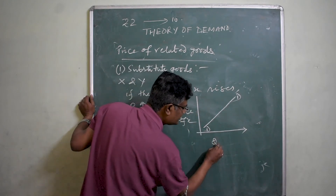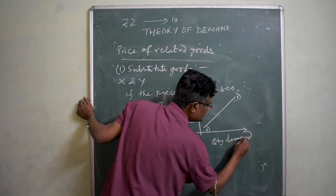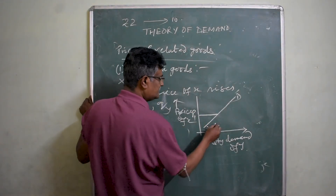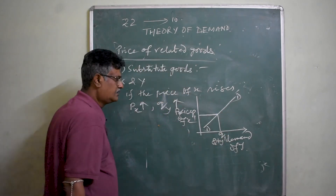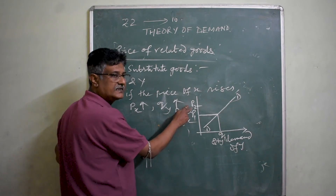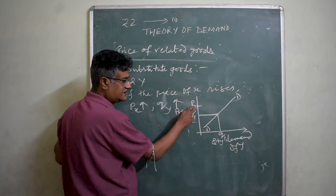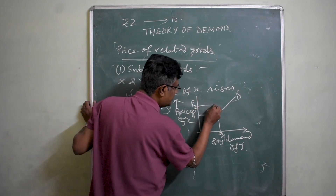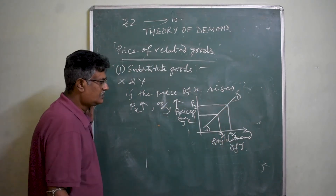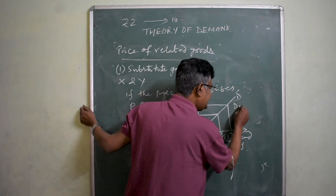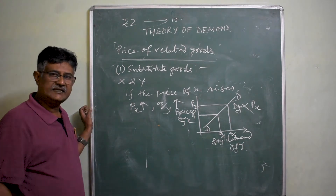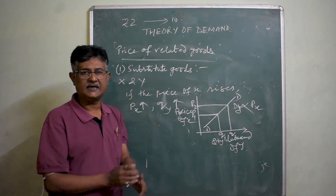In this case, the demand curve will be sloping upward to the right. Here we take the price of X on one axis and quantity demanded of Y on the other. When the price of X rises from OP1 to OP2, X becomes relatively costlier to Y. As a result, the demand for Y increases from OQ1 to OQ2. So demand for Y is directly proportional to the price of X — there is a direct relationship between the two.